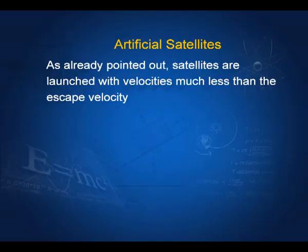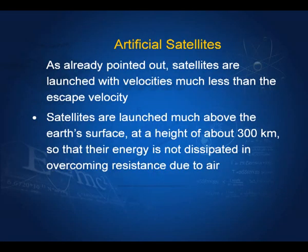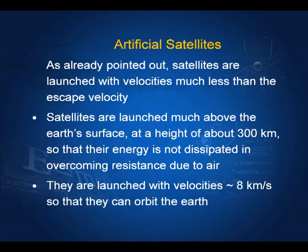Artificial satellites are launched with velocities much less than the escape velocity because we want to keep them in the earth's field. They are usually launched from a height of about 300 kilometers so that air resistance is small and not much energy is lost overcoming drag. They are launched with velocities of the order of 8 kilometers per second so that they can orbit the earth.